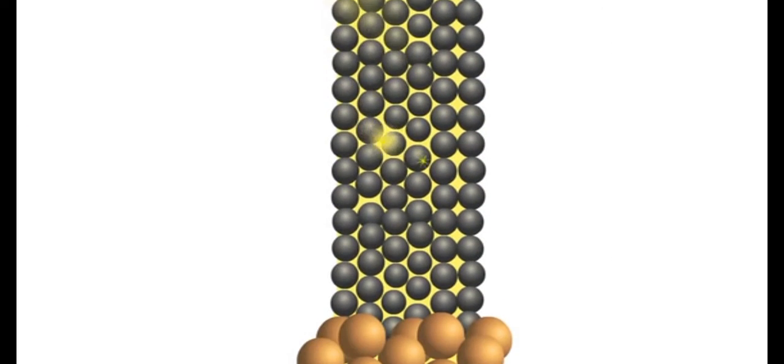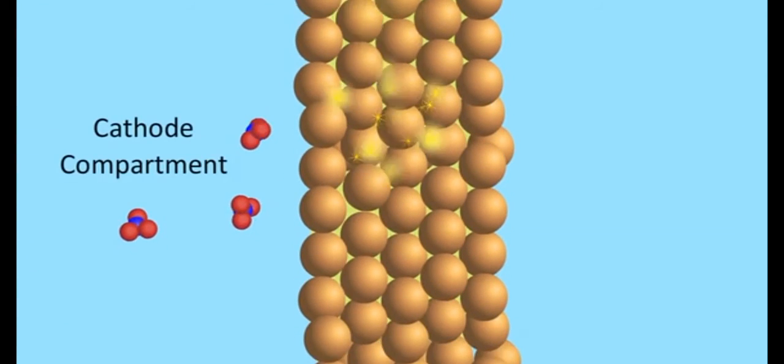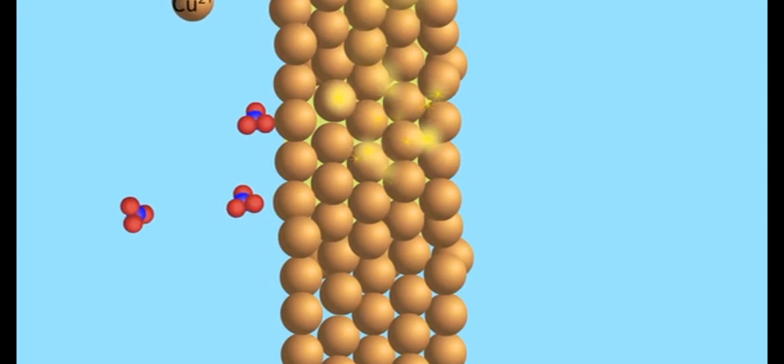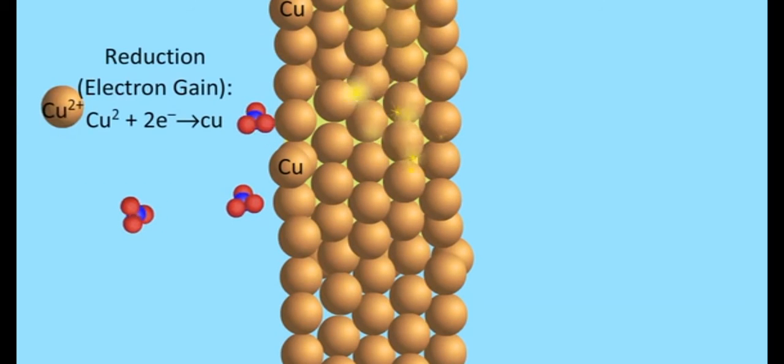the flow of electric current is taken opposite to the flow of electrons. At the cathode compartment, Cu2+ ions of CuSO4 solution accept the electrons and are reduced to copper metal.